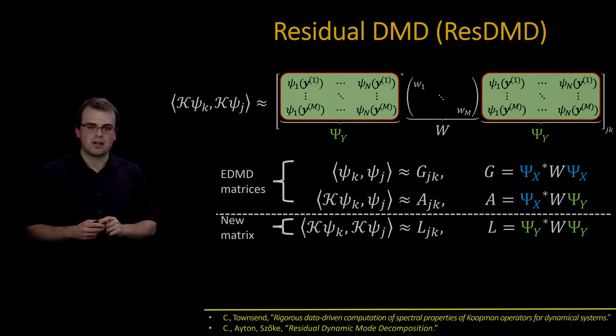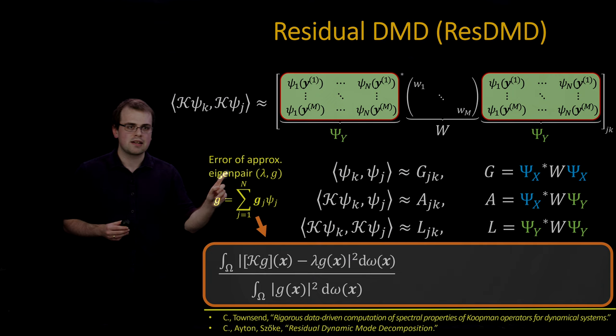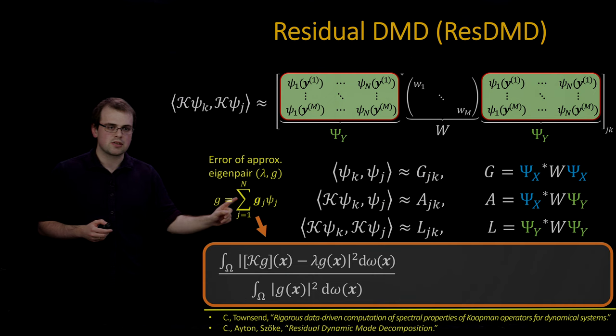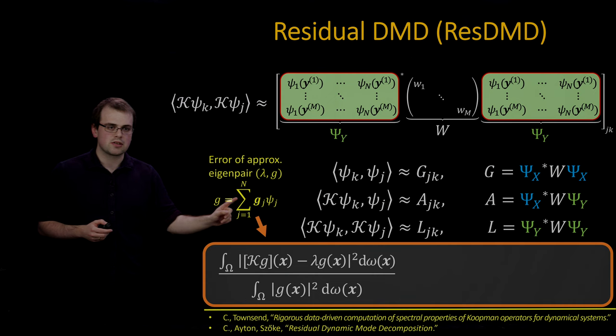Why is this useful? Suppose that I have a candidate eigenpair, lambda-G. One way of measuring the error, how close this eigenpair is to the true spectrum, is to look at this relative squared residual. Here I'm taking the residual of K G minus lambda-G, squared and integrated over the state-space omega. If G was an eigenfunction with eigenvalue lambda, this numerator would be identically zero. The beautiful thing is, you can approximate this error using these three matrices with this nonlinear matrix pencil that I've shown down here. By looking at this additional matrix, you've got access to error bounds. Note that I can construct this matrix from the same data that I used for EDMD.